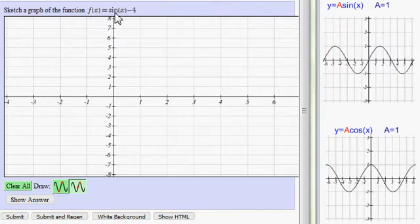In this problem, I am to graph f(x) = sin(x) - 4. So the basic function sine x looks like this, where the amplitude is 1.